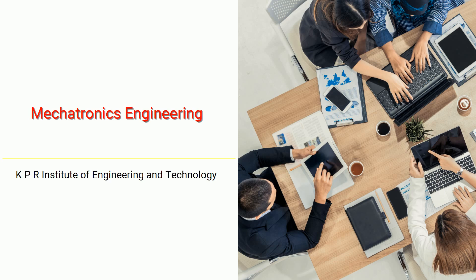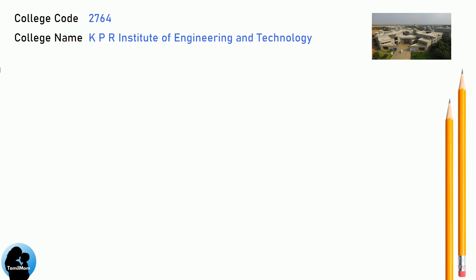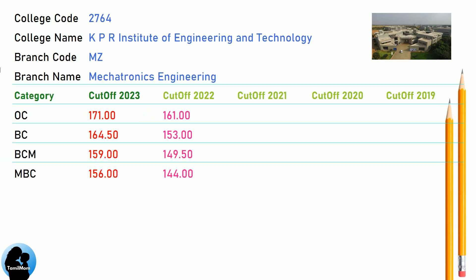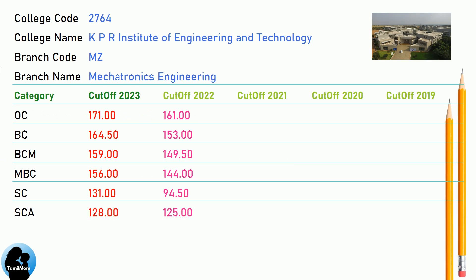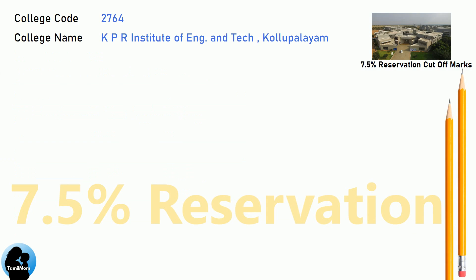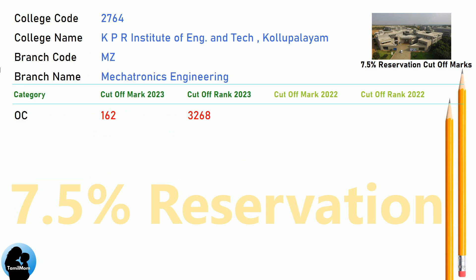DNEA Cut-off for KPR Institute of Engineering and Technology in Mechatronics Engineering. DNEA 7.5 Reservation Cut-off for KPR Institute of Engineering and Technology in Mechatronics Engineering.